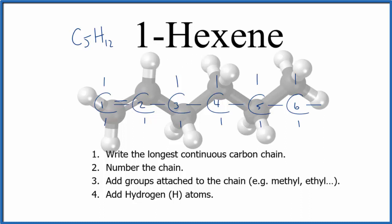We could also draw a skeletal structure if we wanted to simplify this. That would look like this. And again, there's that double bond on the first carbon of one hexene.